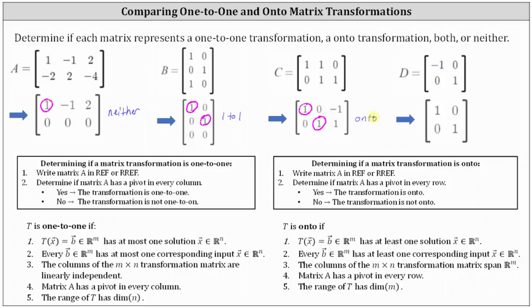Finally, looking at the reduced row echelon form of matrix D, there is a pivot in row one, column one, as well as row two, column two. We have a pivot in every column and every row, and therefore the transformation is both one-to-one and onto.